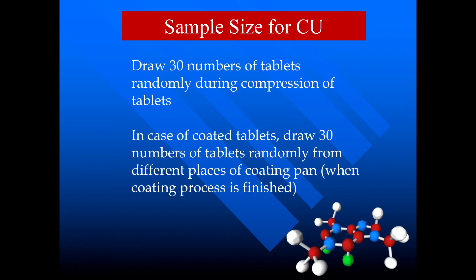For the content uniformity test, we must have a representative sample on which we can conduct the test. The sample size for content uniformity is 30 tablets. Draw 30 tablets randomly during the compression of the tablet. In the case of coated tablets, draw 30 tablets randomly from different places of the coating pan.